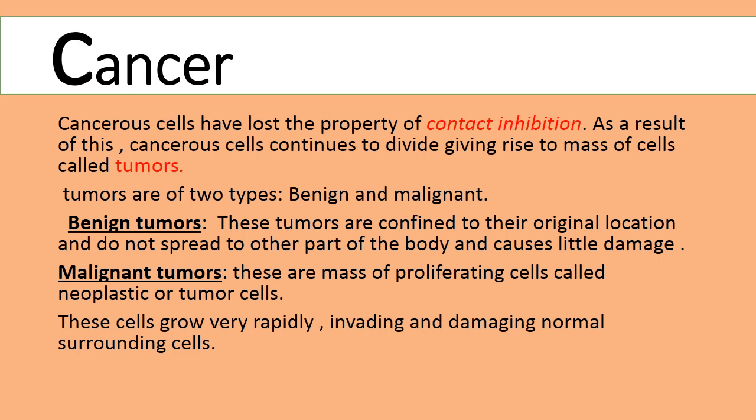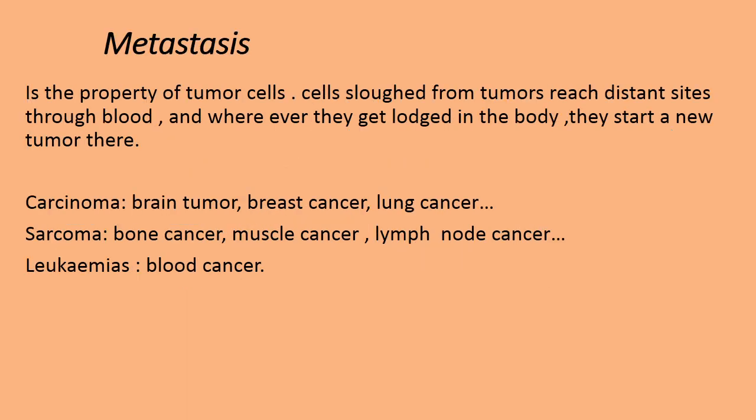If malignant tumors are present in the body, they easily damage the surrounding normal cells. Benign tumors are localized and will not spread, but malignant tumors will easily spread from one part of the body to another by damaging normal surrounding cells. One unique property exhibited by malignant tumors is metastasis — because of this property, the tumor can easily spread from one part of the body to another.